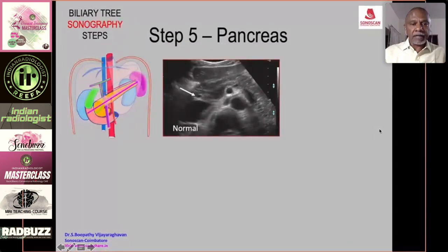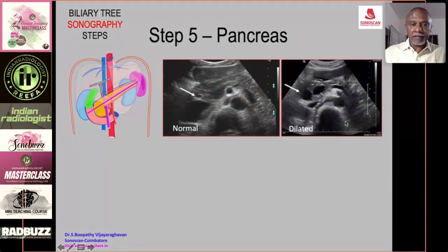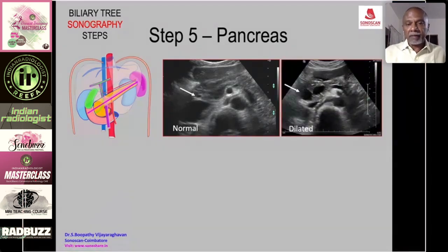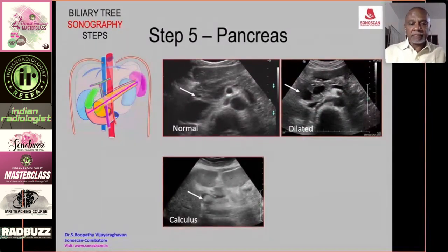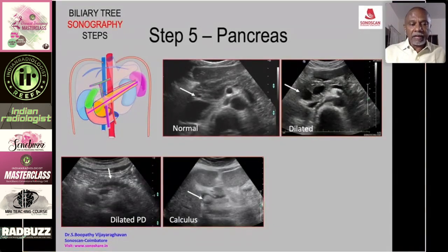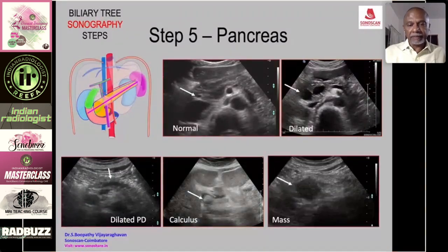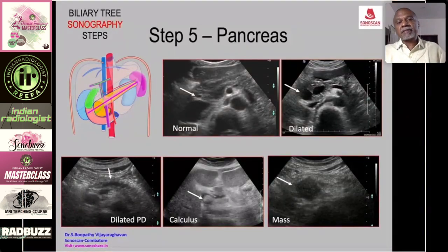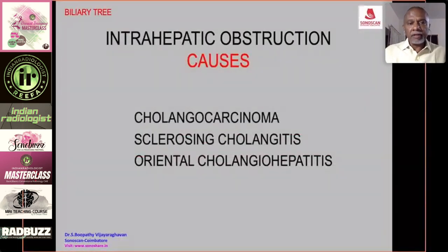Step five — transverse scan of the pancreas: you see the pancreas and the common duct as a cross-section in the head. When the common duct is dilated, it is visible in this scan. A calculus in the distal duct will be seen here. You can also identify a dilated pancreatic duct and the cause of obstruction such as carcinoma of the pancreas if present.